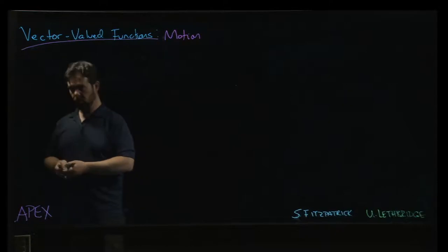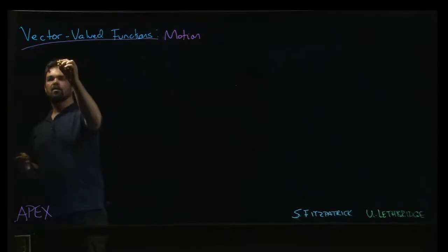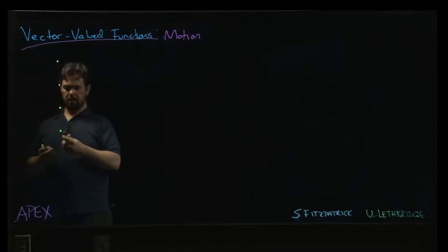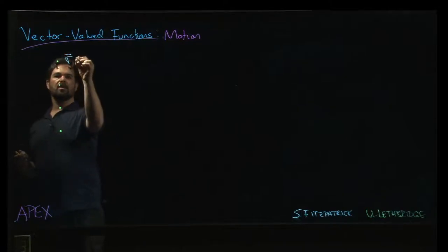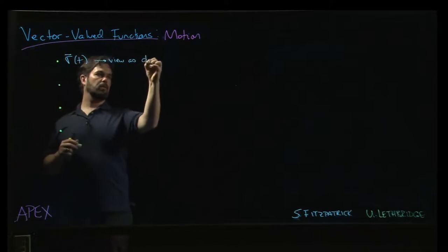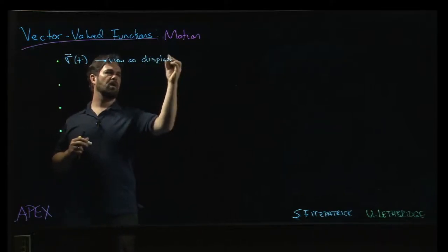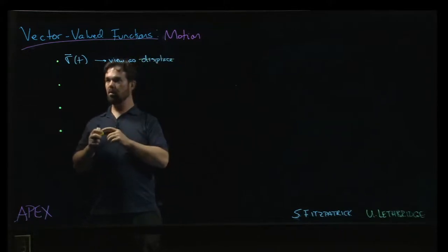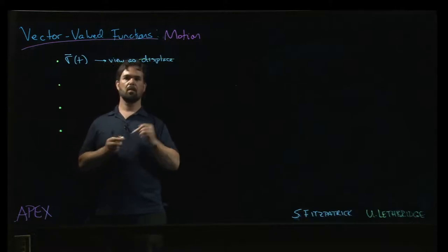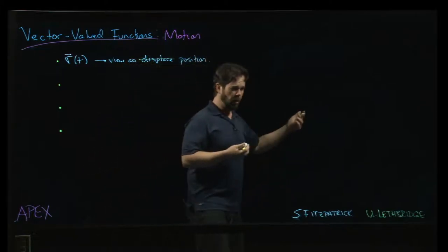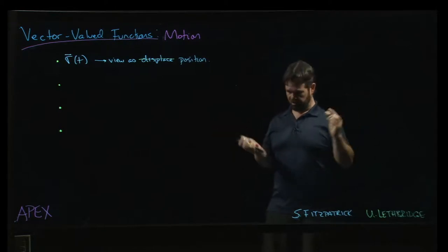And so the quantities that you would have in mind here would be—you'd start with some vector-valued function, say r(t). And we'll view this as, well, not displacement. Displacement would be the change in that function. What we're really measuring here is position. So it gives us the position of a point or a particle or some object in the plane or in space.